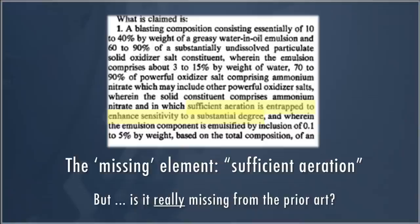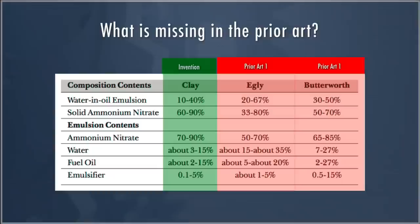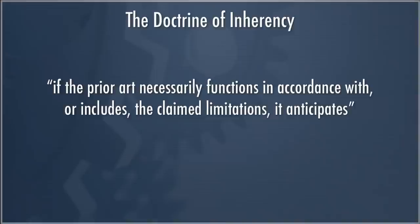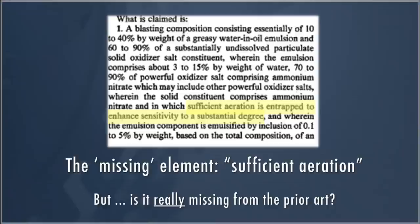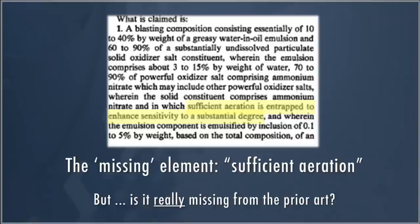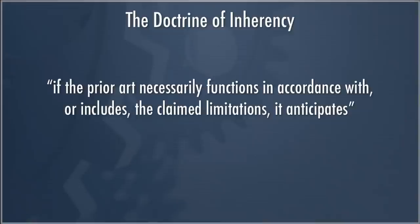But that's not quite the end of the story, because the question is whether it's really missing from the prior art. Just because Egley and Butterworth don't literally state 'sufficient aeration' does not end the inquiry. Patent law includes the doctrine of inherency: if the prior art necessarily functions in accordance with or includes the claim limitation, then it anticipates. We must ask whether Egley and Butterworth necessarily include the sufficient aeration limitation — because if they do, they do anticipate.